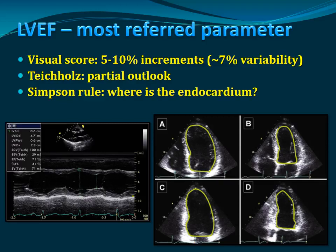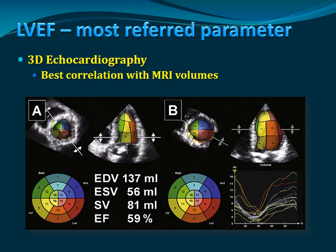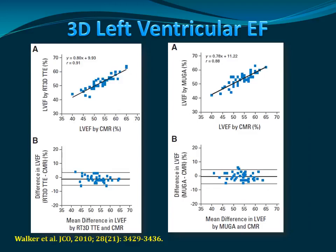The best way to measure ejection fraction is probably on 3D echocardiography. We have the best correlations with MRIs. It is most of the time semi-automatic because the contours are reproduced by the systems themselves. If we look at 3D left ventricular EF with correlation coefficients and Bland-Altman curves, we can see that it correlates very nicely.